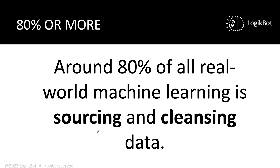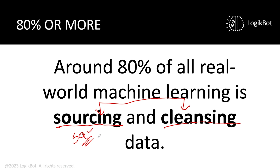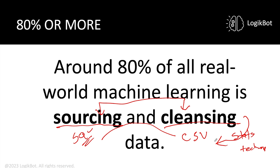80% of real-world machine learning is sourcing — where is the data, get the data from somewhere, you don't just download it from the internet — and then cleansing the data. I can tell you it's much higher than 80%. Modeling for me is about 3% of my job, and then there's sourcing, cleansing, and meetings. You've got to take your data, most of it's in a SQL database, use SQL to extract it out, get it to a CSV file, and then apply your statistical techniques to your data in order to cleanse it for modeling.